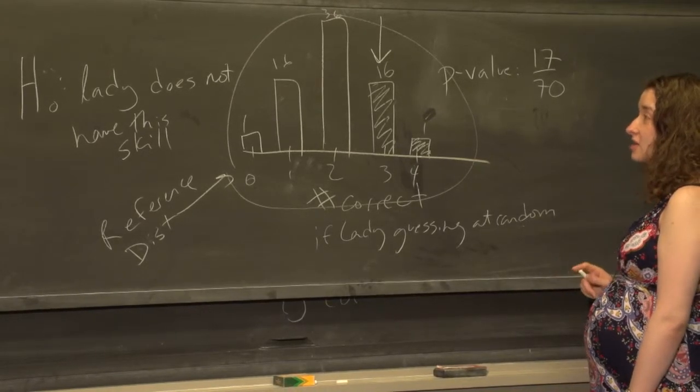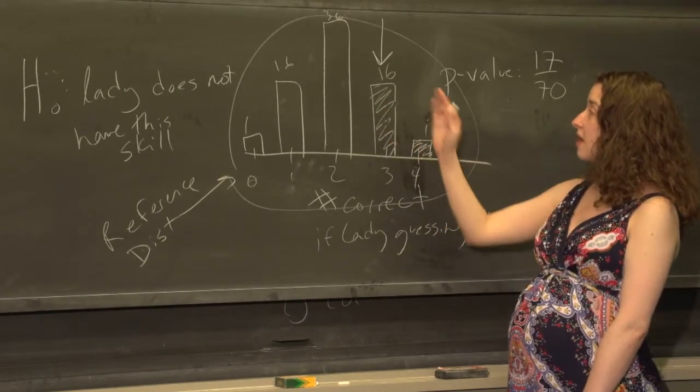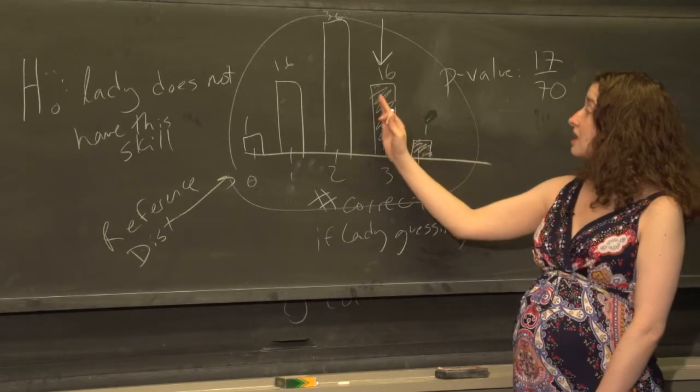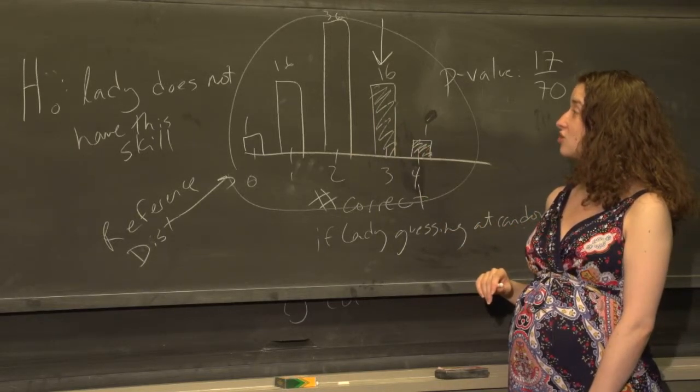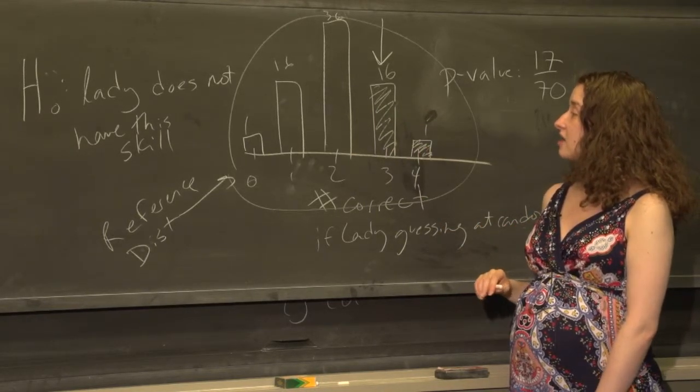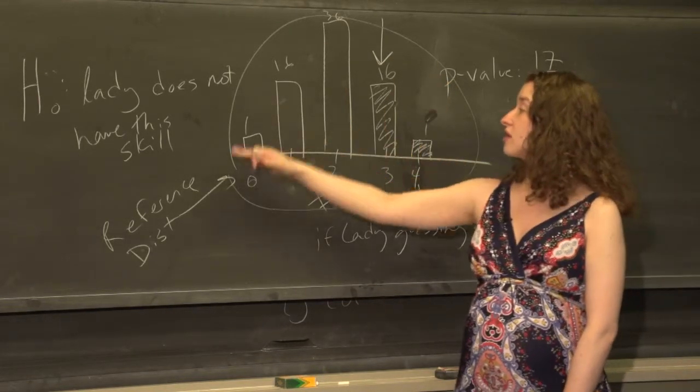We could have calculated this number in multiple ways. What we calculated is called a right-sided p-value: What's the probability that we would see a number at least as big as we actually saw, if the null hypothesis is true? We also could have calculated the left-sided p-value: What's the probability she'd get three or fewer correct?